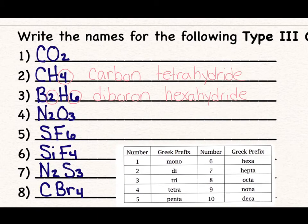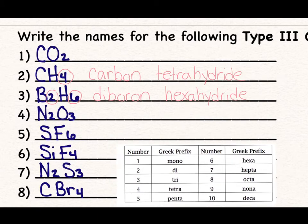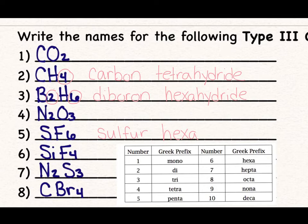Let's look at number 5 with sulfur. We have 1 sulfur, so we just say sulfur — we do not write monosulfur; that's not a thing. Then fluorine: there are 6 of them. The prefix for 6 is hexa, so we say hexafluoride.